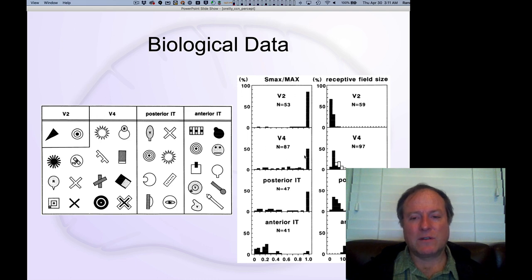But now when you go to V4, you can see that it's increasingly responding more to these more complex stimuli and not quite as much to the simple cell stimuli. This progression increases with more complex stimuli coming in in posterior IT.